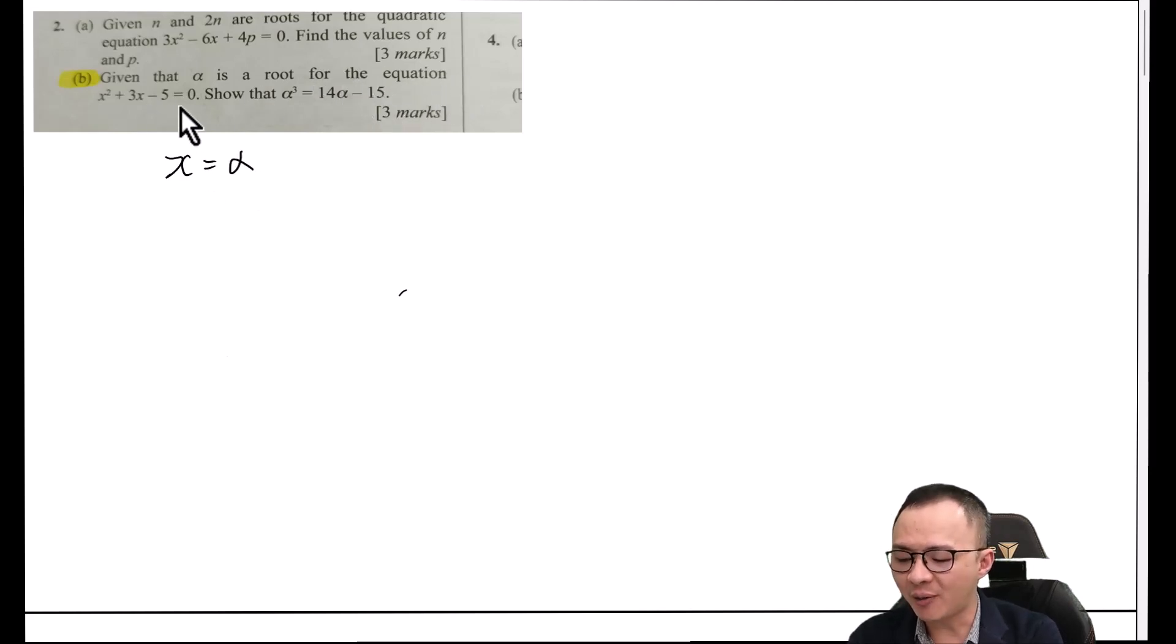And then we have x squared plus 3x minus 5 equals 0. This is a very standard quadratic equation, but they asked us to show alpha power of 3 equals 14 alpha minus 15. So this thing is a little bit weird. It's like you only have a quadratic equation, but you want to get something like alpha power of 3 or x power of 3.